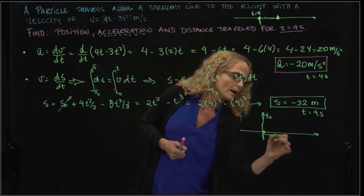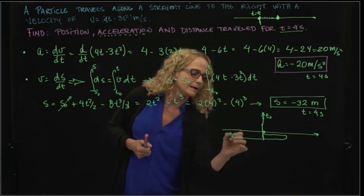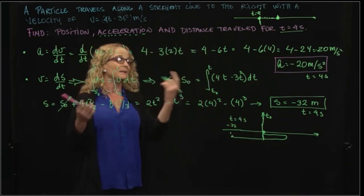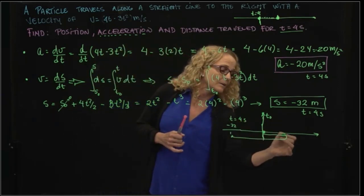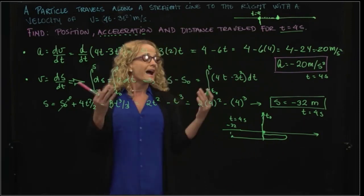So it means that it went some distance to the right, and then some distance to the left. How do we know that?